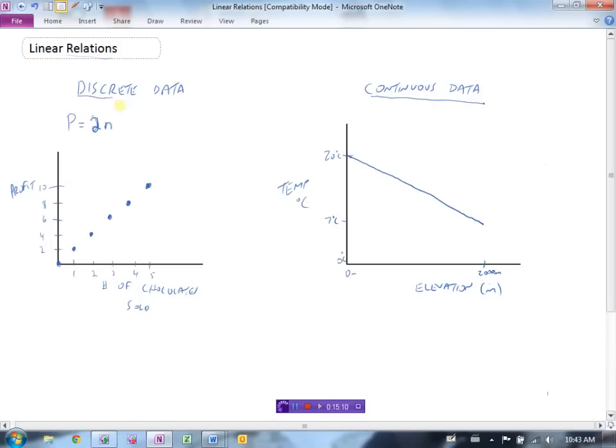If it doesn't make sense to have the points connected because we can't have decimals or fractions of, in this case, chocolates, then this would be discrete data and it would end up being plotted just as a series of points on the graph. So both of these are linear data. This is lying in a straight line, but it's discrete. We only can include the points that make sense. Whereas with the continuous data, it's possible to have any elevation and similarly the outside temperature can be anything between, in this case on our graph, zero and twenty.